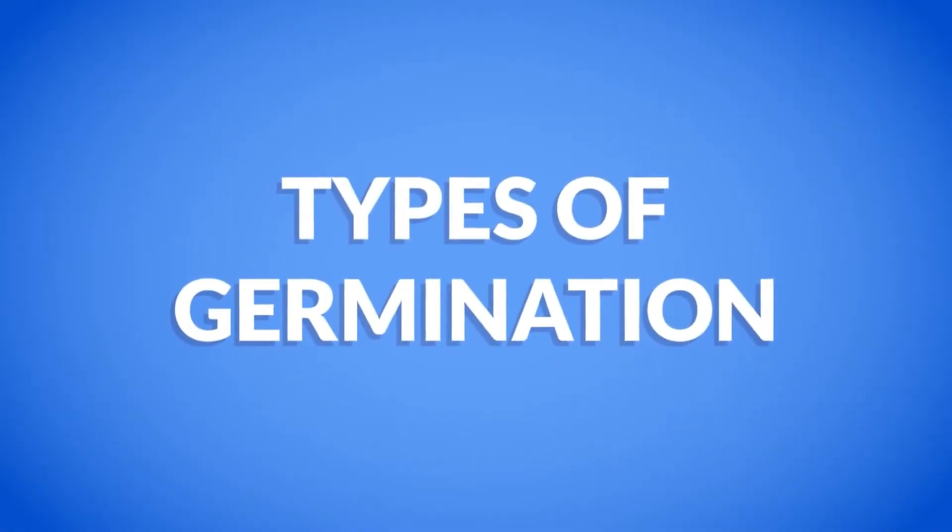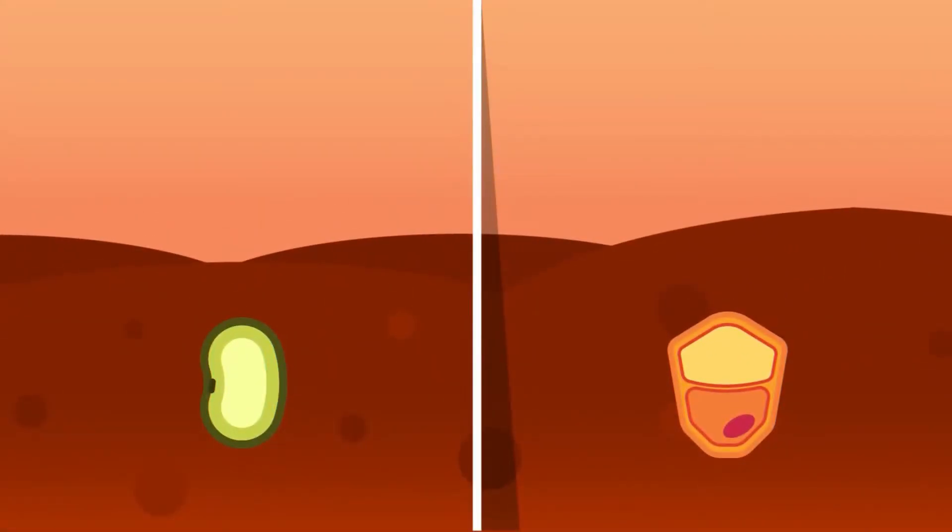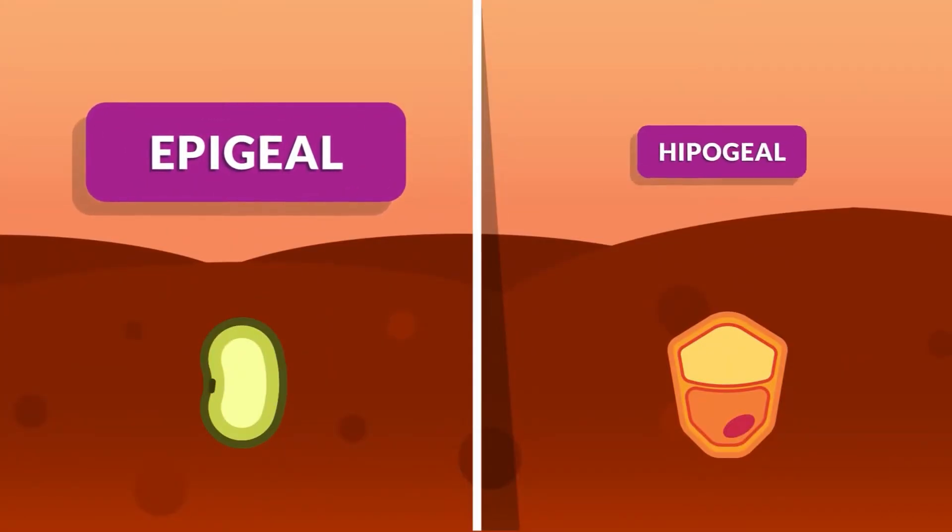Types of germination. There are two types of germination: epigeal germination and hypogeal germination.